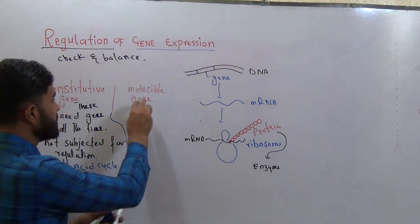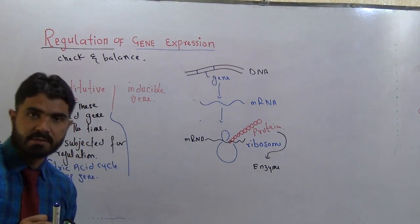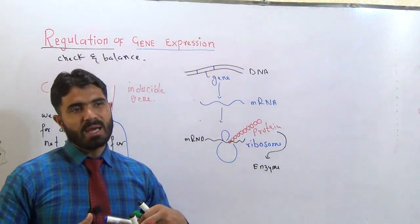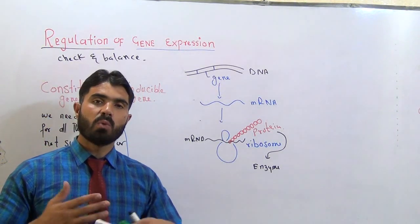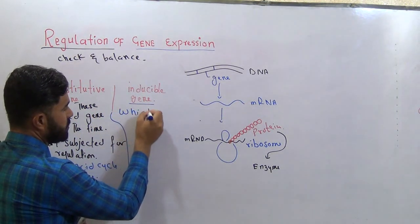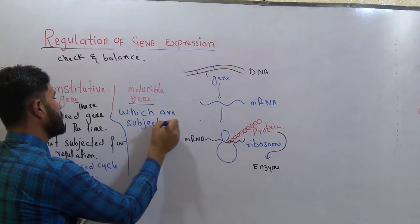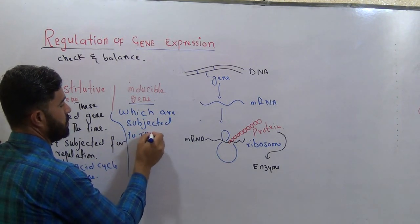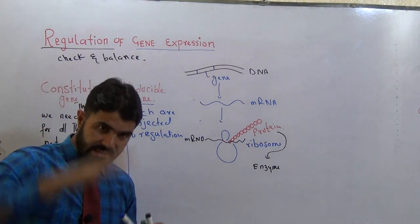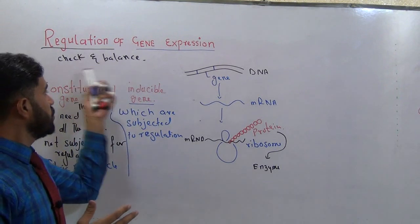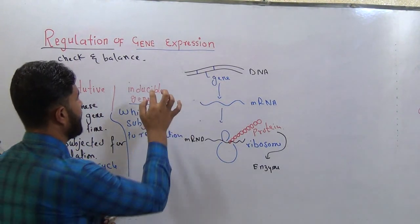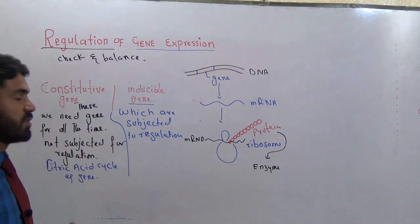On the other hand, inducible genes are the opposite of constitutive genes. These are genes that we require in our body for some time — sometimes we want more product, and sometimes we want less and want to stop. In simple words, inducible genes are those genes which are subjected to regulation, meaning subjected to check and balance. Positive regulation and negative regulation can be applied to inducible genes only, not to constitutive genes.